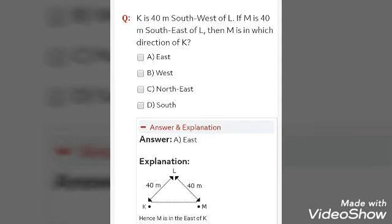Now, let us come to next question. If M is 40 meter south east of L, then M is in which direction of K? Now, K is 40 meter south west and draw it just like in the explanation I have drawn. The options are east, west, northeast or south.